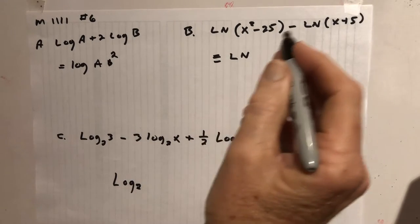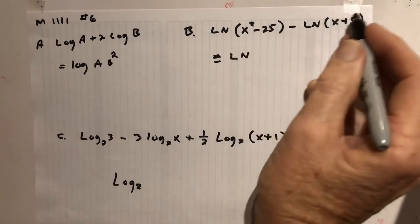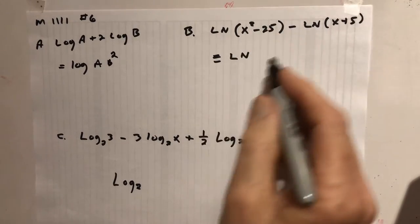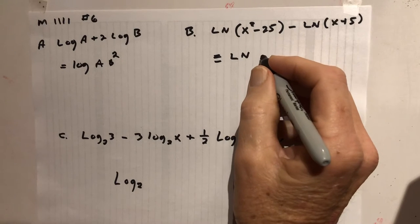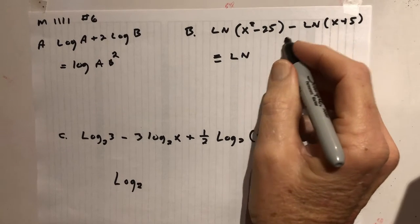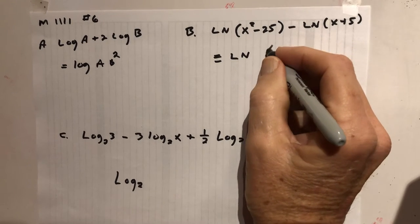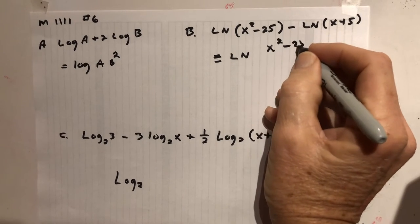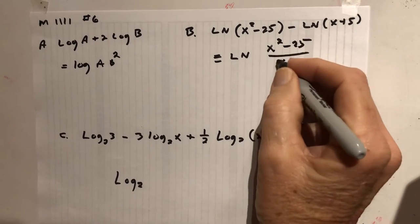Over here there's two things. Well, there's lots of things, but there's one parenthesis and a second parenthesis with two logs. So we're gonna put the two parenthesis together. But it's subtract. So instead of multiplying, we'll divide. So we'll put one of them on top and the other one on bottom.